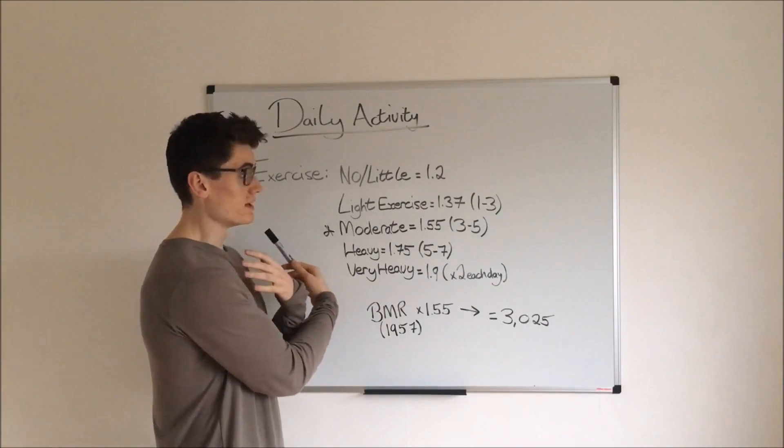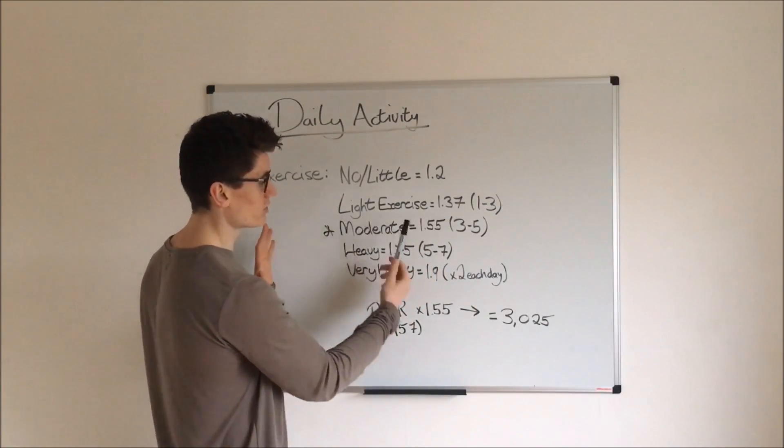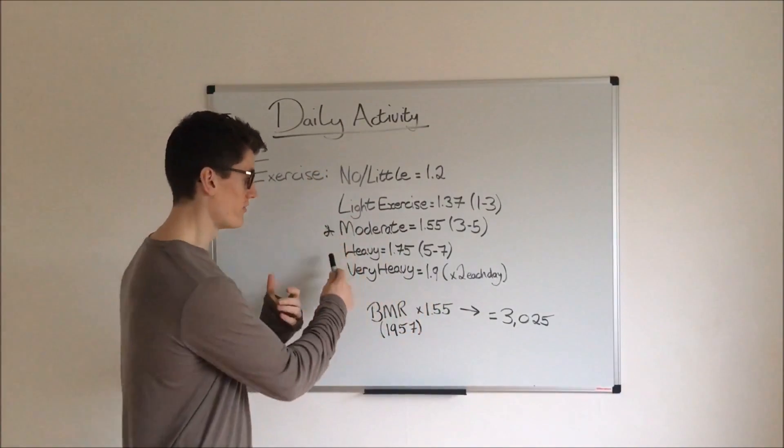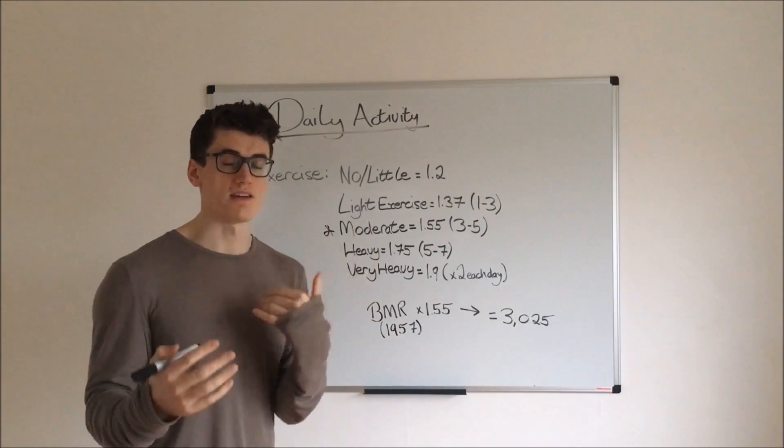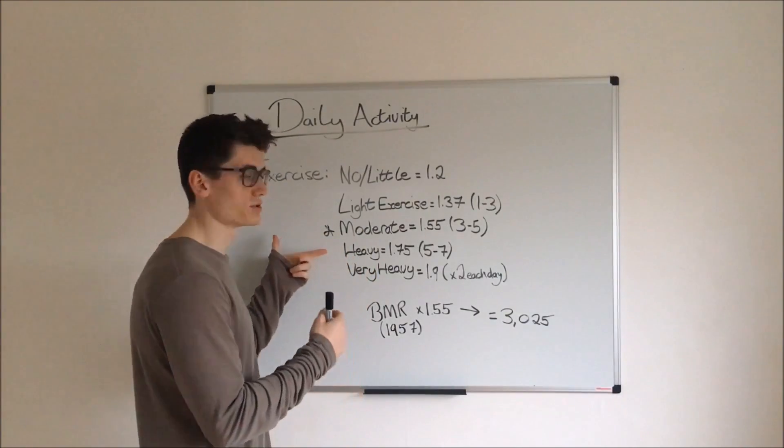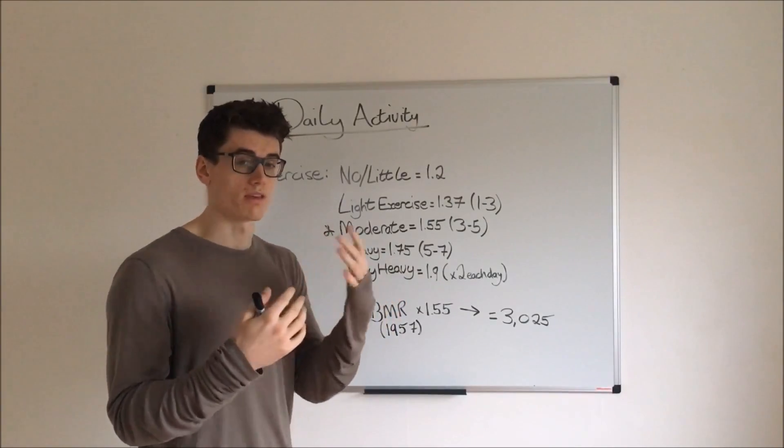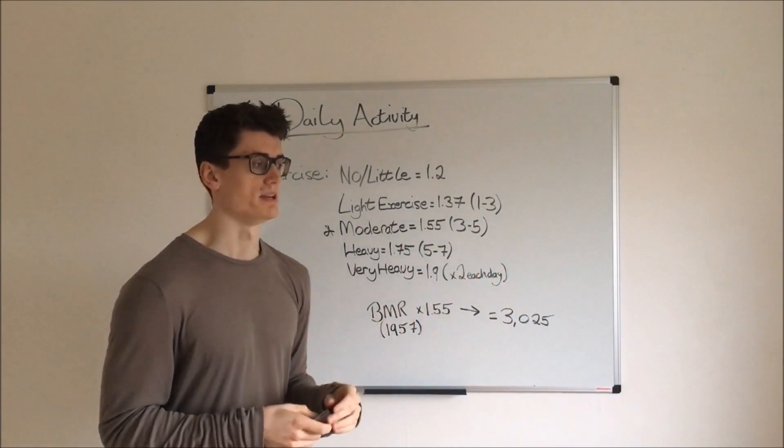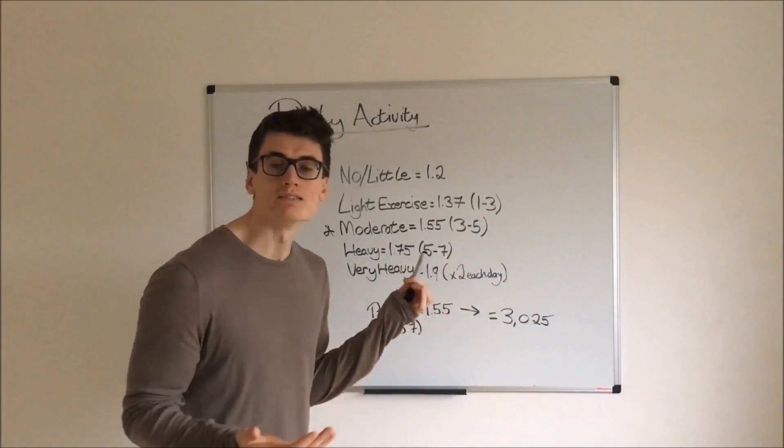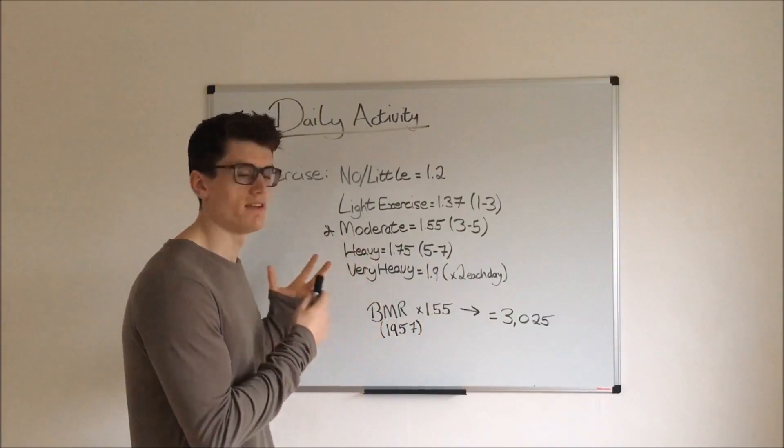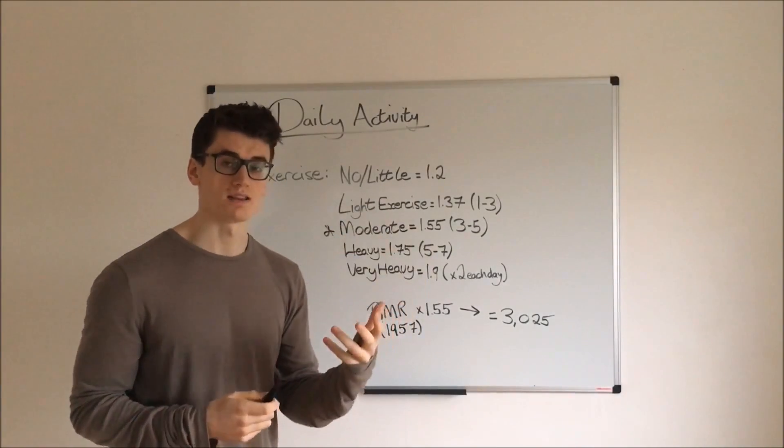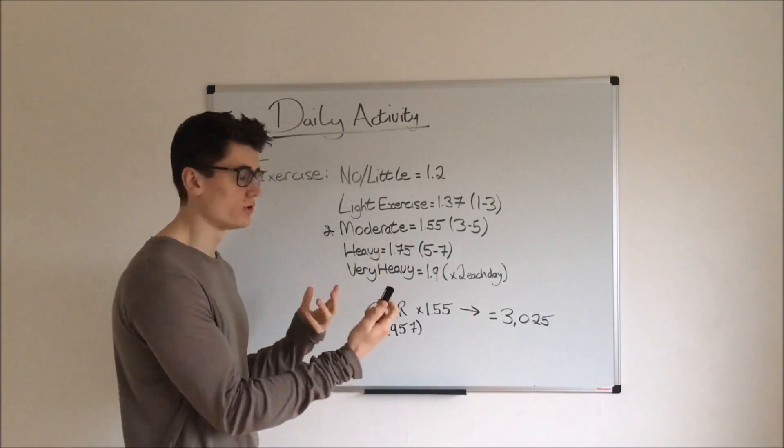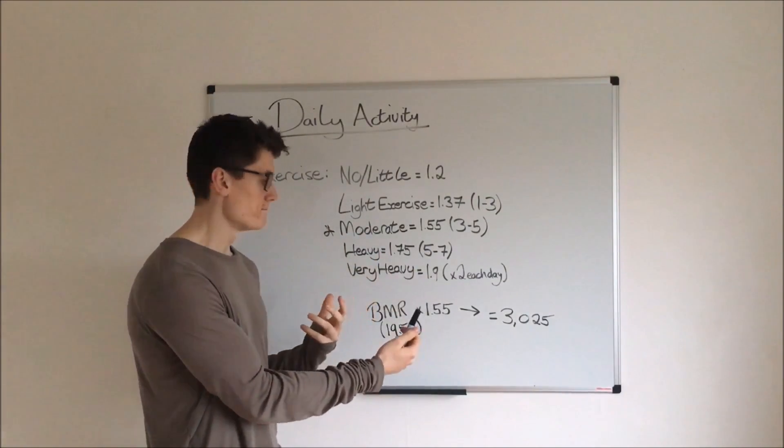Moderate is where I believe I fit. In terms of moderate, it would mean exercising three to five times a week. In terms of heavy, it refers to exercising five to seven days a week. This also reflects somebody who perhaps has more of an active job, so someone who's on their feet all day—whether it could be personal training, being a waiter, or being on a building site. If you're on your feet for the majority of the day and you do exercise outside of that, then you definitely need to be within at least this heavy category. Therefore, you times it by 1.75.